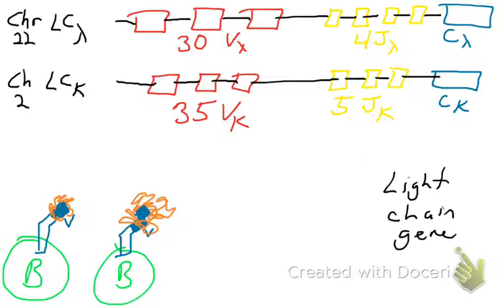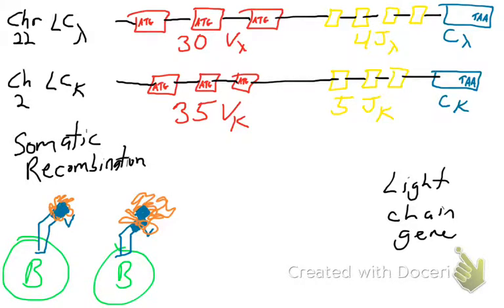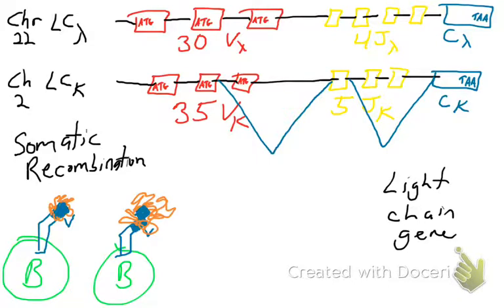When your B cells are developing in your bone marrow, one of these genes gets chosen to be recombined and make protein. So somatic recombination occurs — permanent changes in the DNA that give rise to a functional protein. One of the variable gene segments gets chosen, cut, and stitched to one of the joining gene segments.